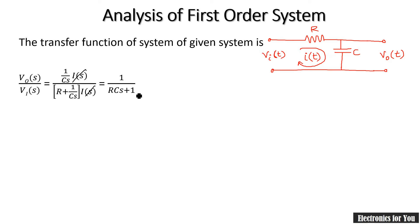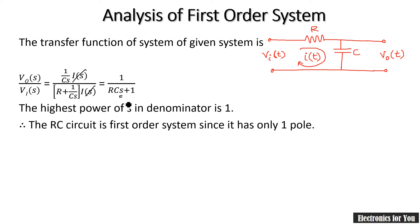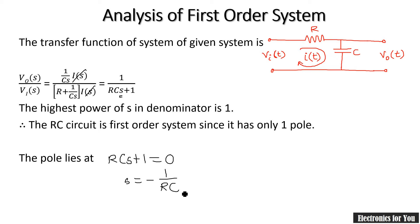Note that the denominator has s with power 1, confirming this is a first-order system. To find the pole, set RCs+1 equal to zero, giving s equals minus 1/(RC). Here RC is the time constant, as the equation is in the form K over Ts plus 1 where T equals RC.